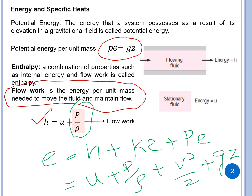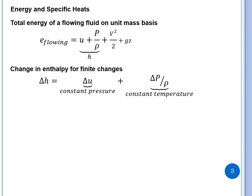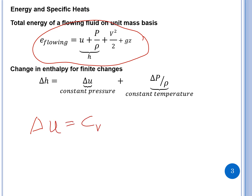If you have any questions, note them down and we will discuss after finishing this presentation. One more point: we have now discussed specific heat. The change in internal energy delta u is basically Cv times delta T, where Cv is the specific heat at constant volume times the change in temperature.